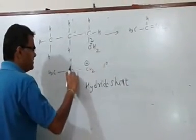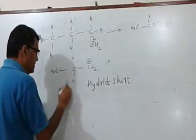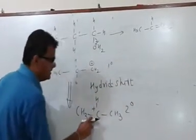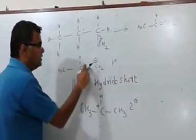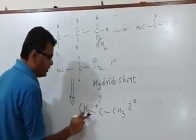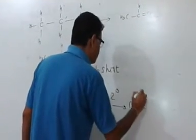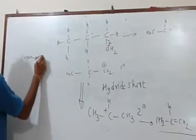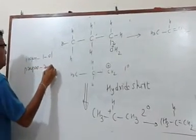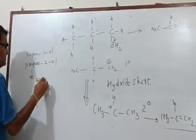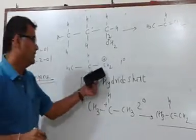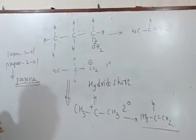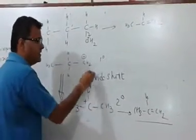So due to hydride shift this particular bond shifts here and a positive charge comes over here. So in the rearrangement you will get a secondary carbocation which is more stable than the primary carbocation. So after the rearrangement again the same thing will happen. It will remove one of the hydrogens and what you will get is propene. So whether it is propan-1-ol or whether it is propan-2-ol the alkene formed will be propene. Because a primary carbocation will shift into a secondary carbocation and then it will eliminate. So this particular example is just to make you aware of the shift of carbocation from primary to secondary.